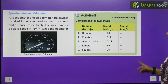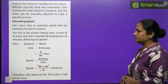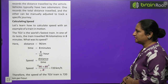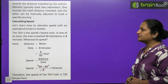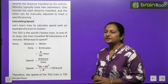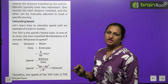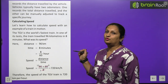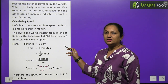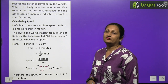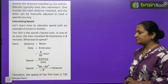Calculating speed with the example of a train in motion: the TGV is the world's fastest train. In one of its tests, the train traveled 96 kilometers in 8 minutes. What is its speed? Distance is given in kilometers but time is in minutes, so we convert minutes to hours — 1 minute equals 1/60 of an hour, so divide by 60. Solving this gives a speed of 720 km per hour. Therefore, the speed of the TGV train is 720 km per hour.